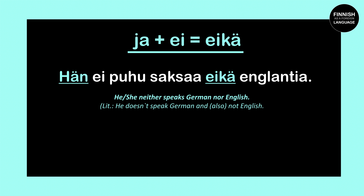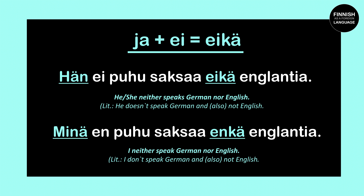But whenever we change our personal pronoun, the EIKE can also change. Mina enkä puhu saksaa, enkä englantia means 'I neither speak German nor English'. Here we have the ENKÄ form because of the personal pronoun mina. So what we see here is that EIKE changes depending on which personal pronoun we have.